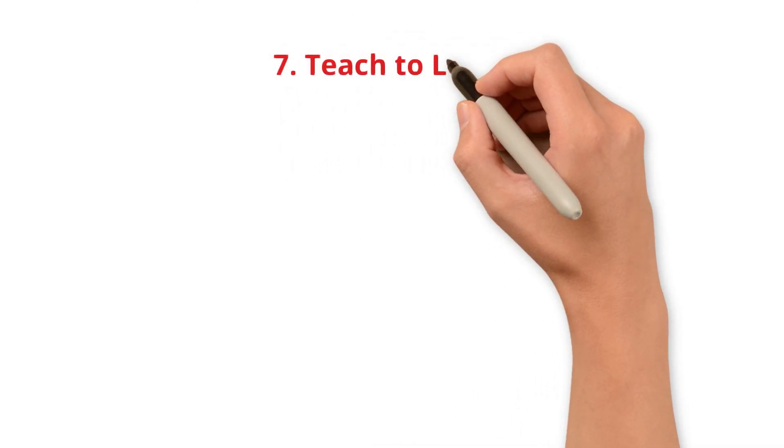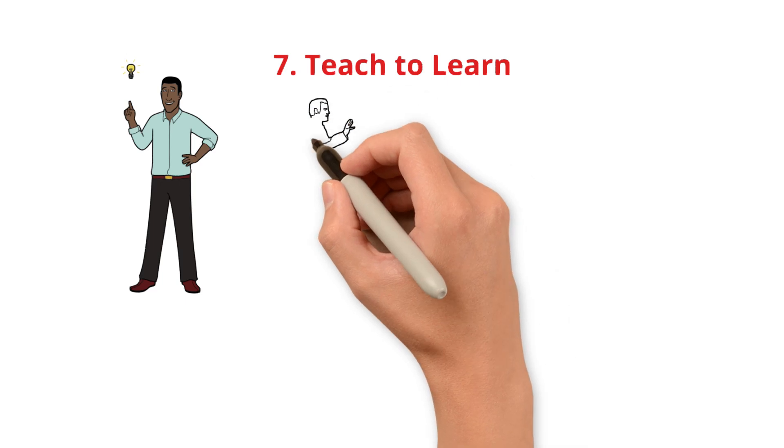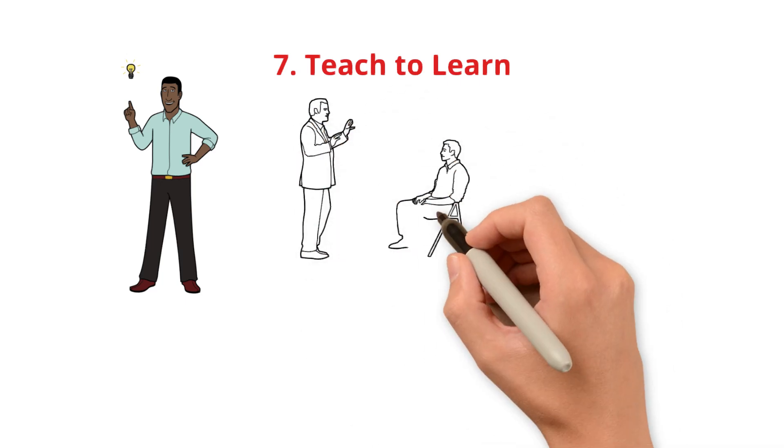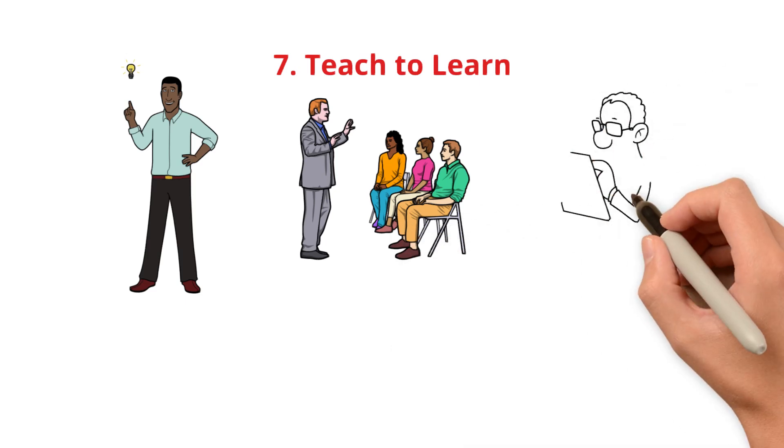Tip number 7. The teach-to-learn method. Ultimate learning hack. Want to learn twice as fast? Teach someone else. Yes, really. Explain what you learned to a friend, family member, or even yourself. Use the Feynman technique.